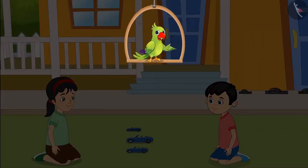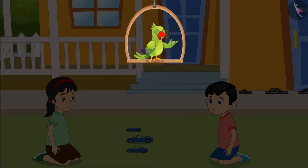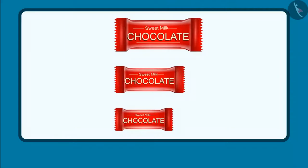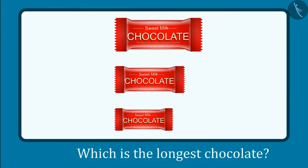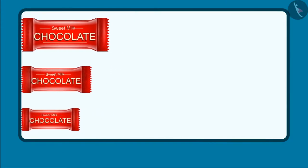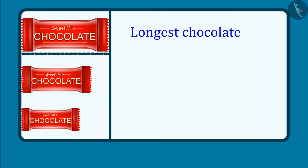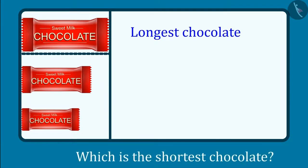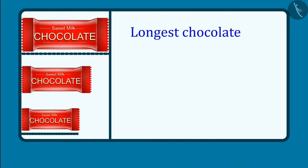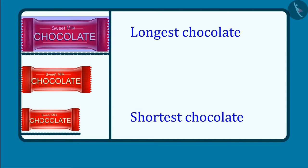So, kids, now you can also identify the longest object and the shortest object out of three objects, just like Chotu. Come, let's see. These are three chocolates. Can you tell me which is the longest chocolate out of these? Yes, this chocolate is the longest. And which is the shortest chocolate out of these three? Yes, this chocolate is the shortest. This means that out of these three chocolates, this is the longest chocolate and this is the shortest chocolate.